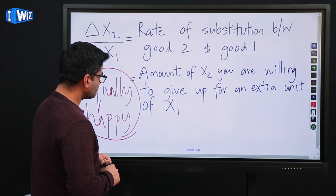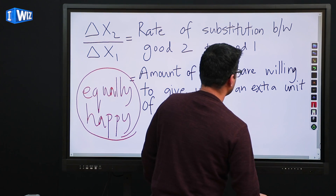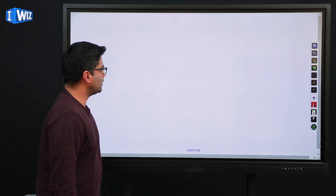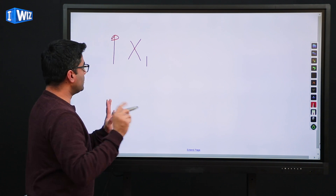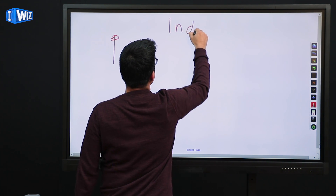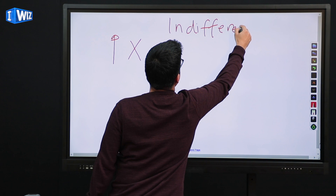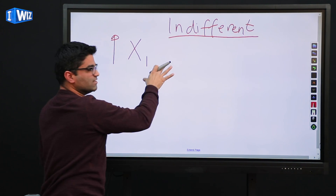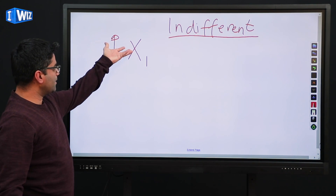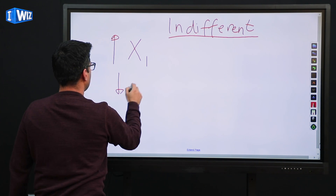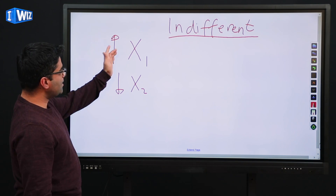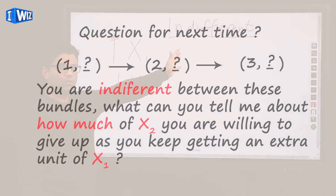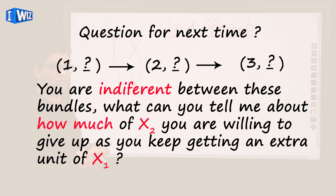Make sure you are clear on this, and let me leave you with one question that we will address next time. As you are getting more x1 — keep in mind that you are indifferent — given the fact that you are going to be indifferent between these bundles, if you are getting more of x1 you have to be giving up some of x2. So think about: as you keep getting an extra unit of x1, what can you tell me about how much of x2 you are going to be willing to give up to leave you equally happy?